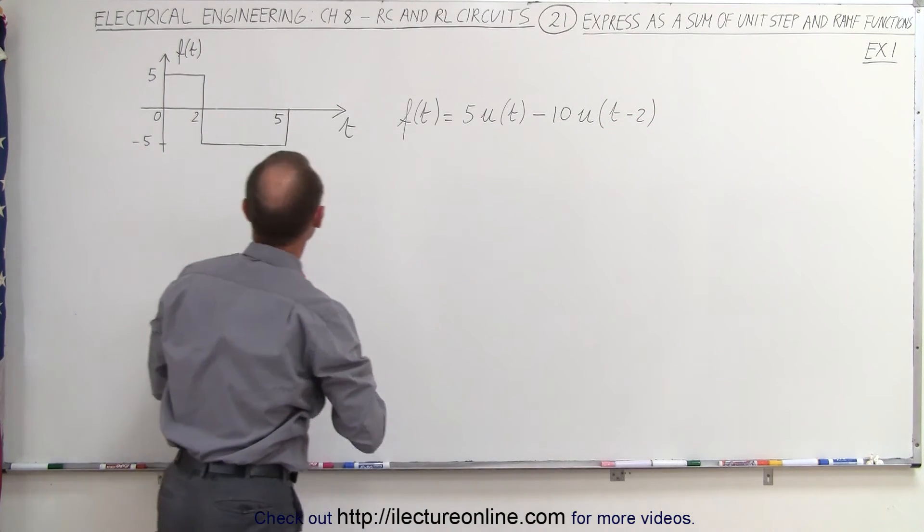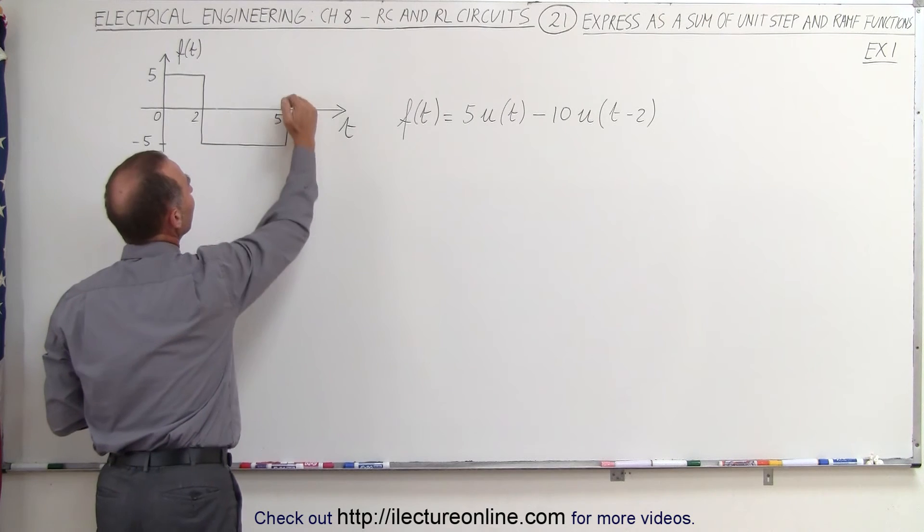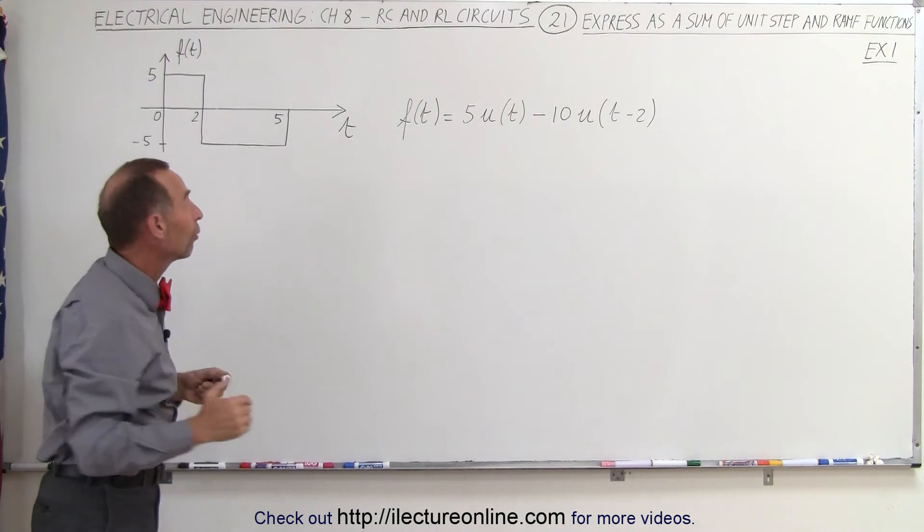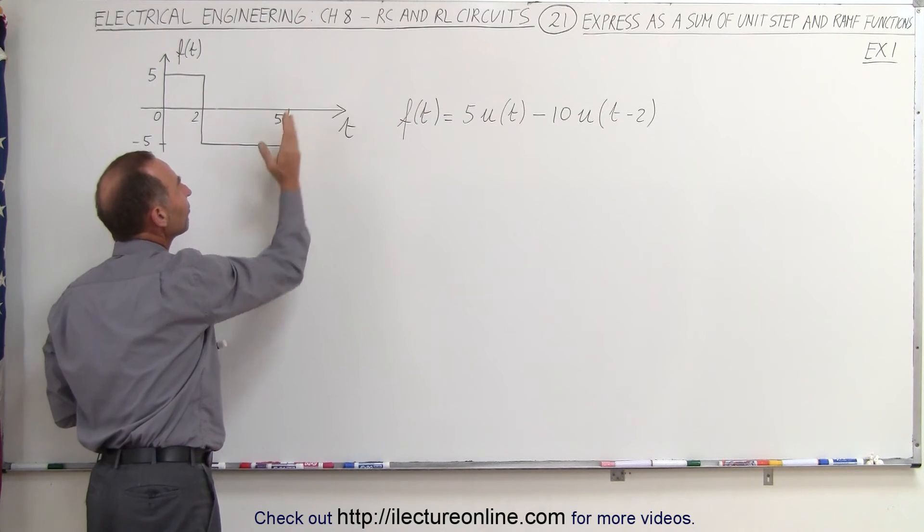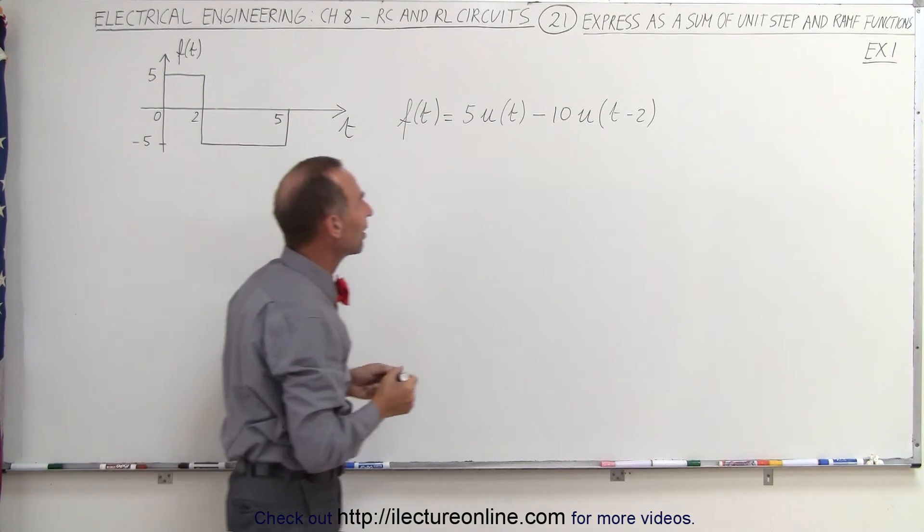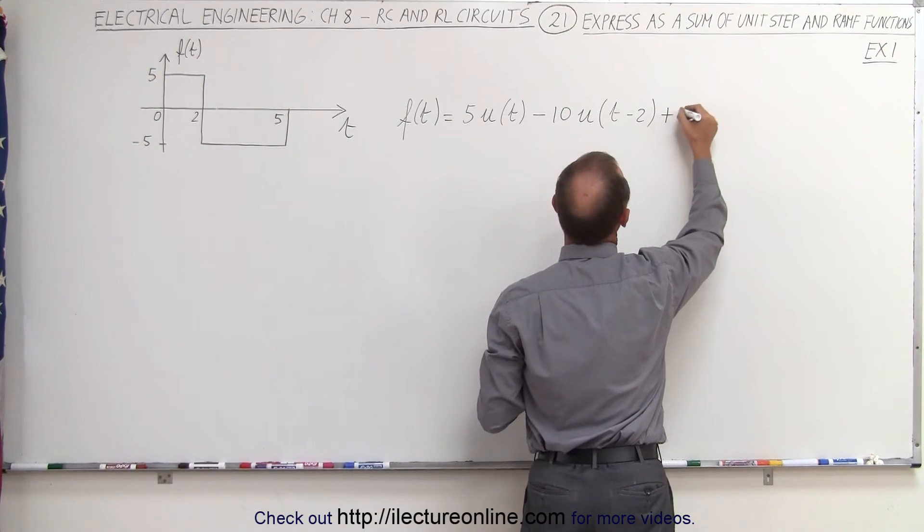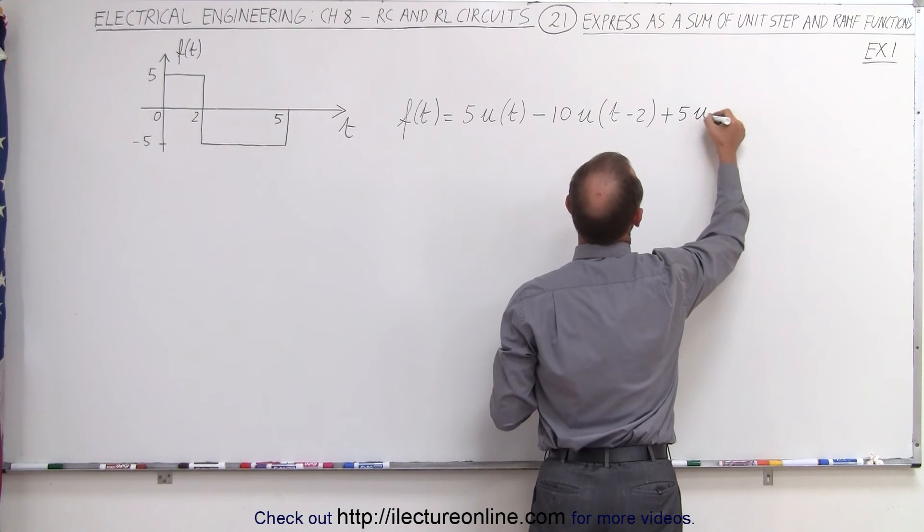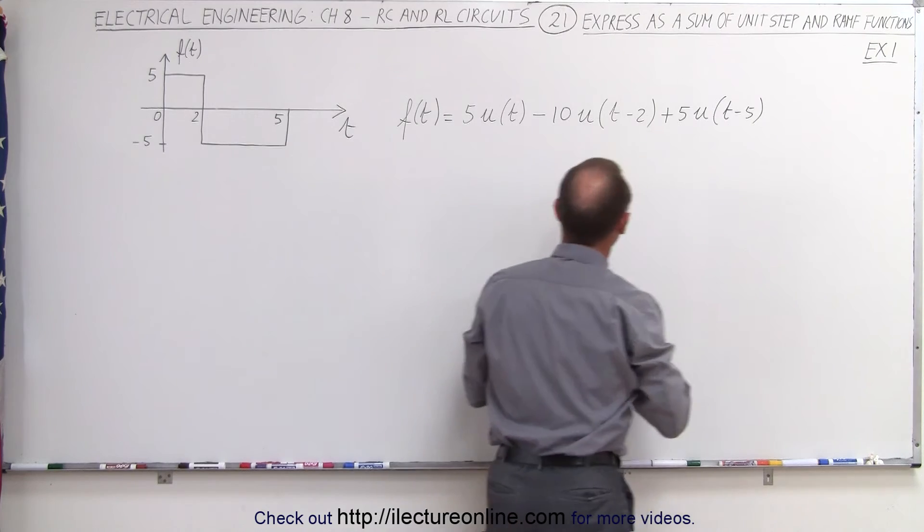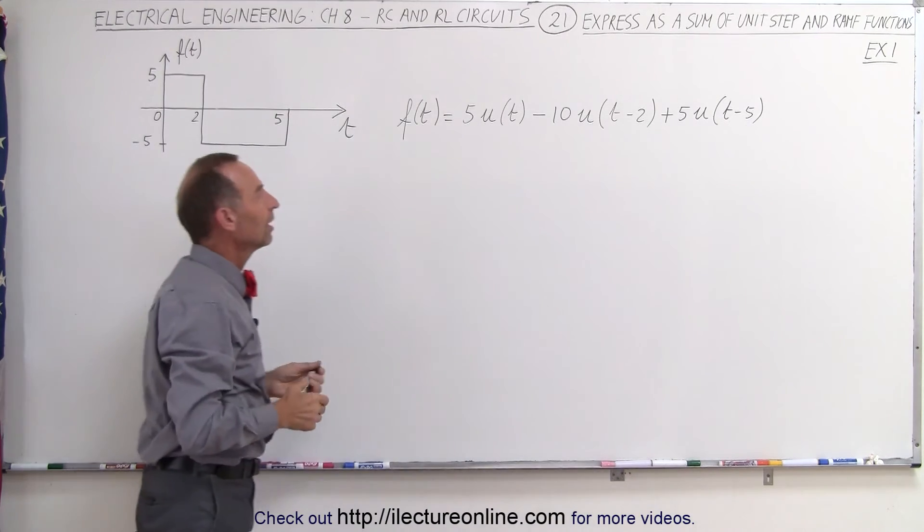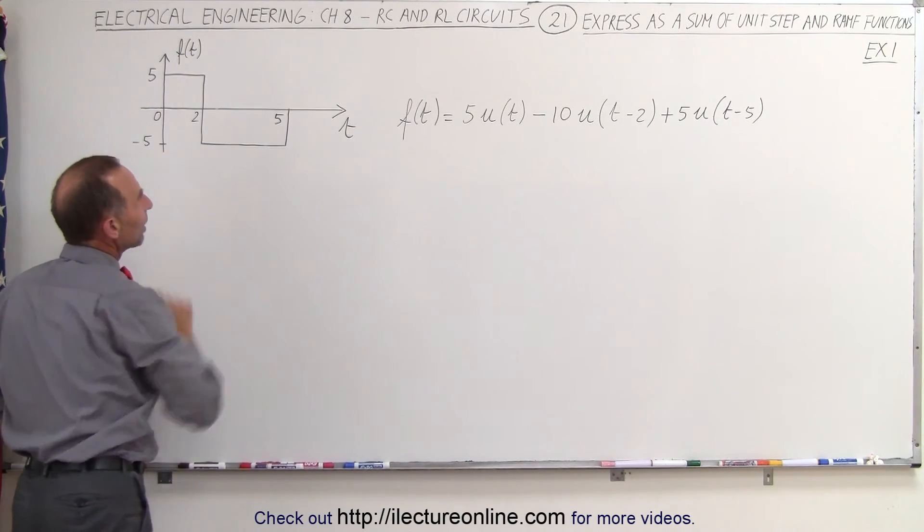And then finally, after five seconds, we want to get back to zero, which means to go from minus 5 to zero, we have to add an amplitude of 5 starting at time equals five seconds. So it would be plus 5 times the unit step function at t minus 5 seconds. And that in combination is exactly representative of what we have over here.